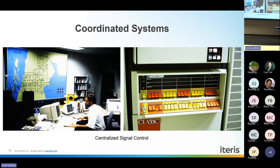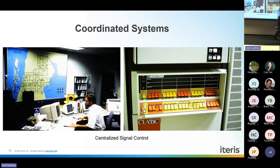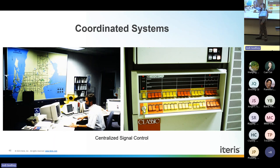Things evolved significantly. With the advent of the personal computer in the mid-1980s, we developed closed-loop systems where a dial-up modem could connect to an on-street master controller, which then communicated with adjacent signals along the corridor. Traffic management centers today — like those in the City of Tampa and Hillsborough County — have evolved dramatically from those early systems. The snap displays showing intersection-by-intersection red and green status were expensive but gave operators a real-time view of signal status across the network.